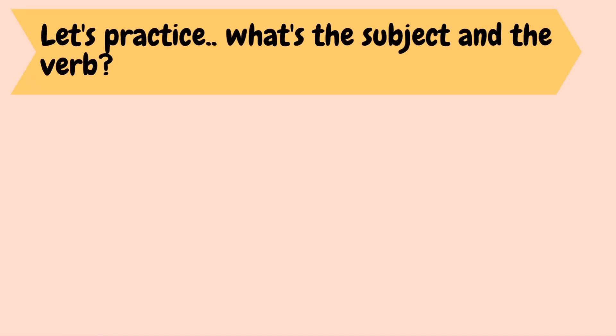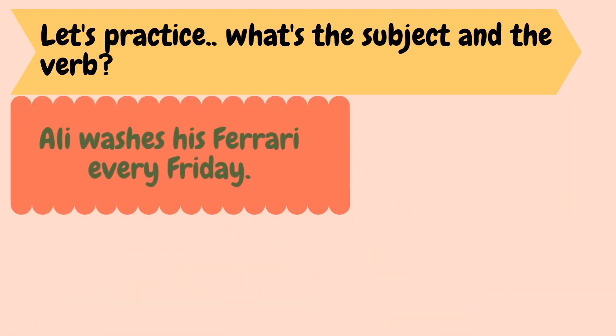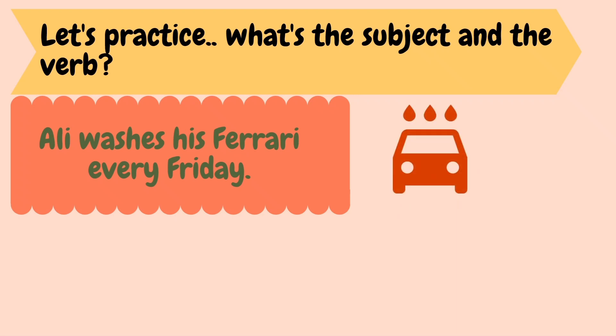Let's practice! Tell me what the subject and the verb are in each of the examples. 'Ali washes his Ferrari every Friday.' That's right — the subject is Ali; the sentence is about him. The verb is 'washes' because that's what he does. Well done, try another!